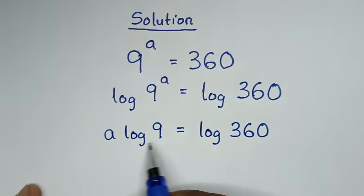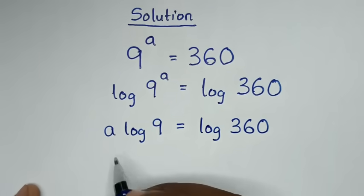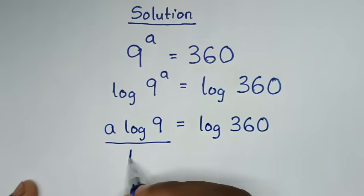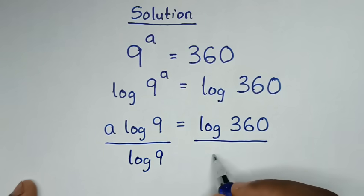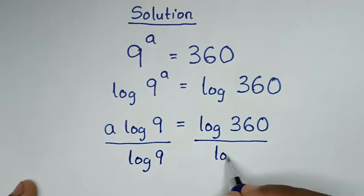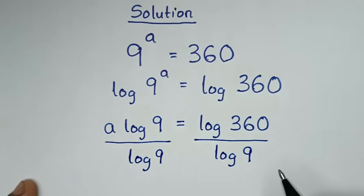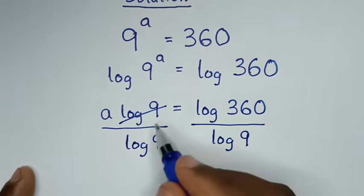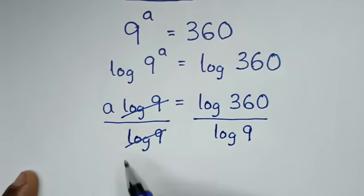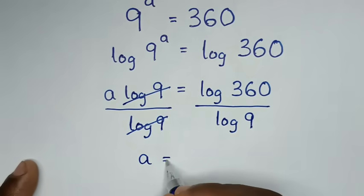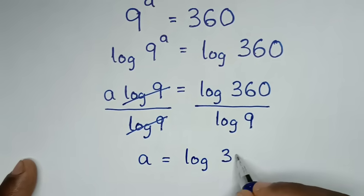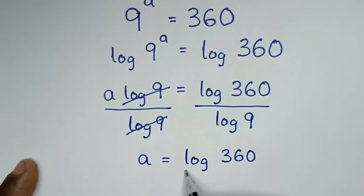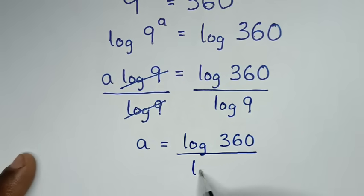Then we'll divide by log of 9 in both sides. So here it will be over log of 9 on both sides, and this log of 9 will cancel this log of 9. Then it will be a is equal to log of 360 over log of 9.